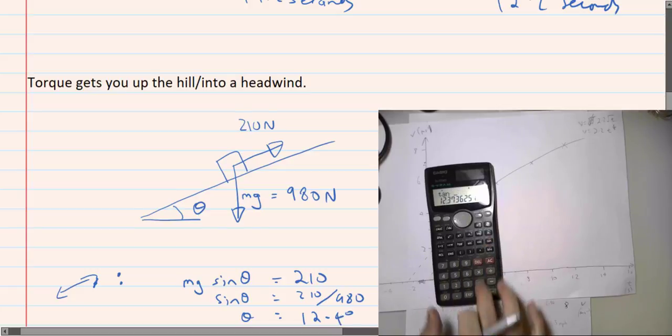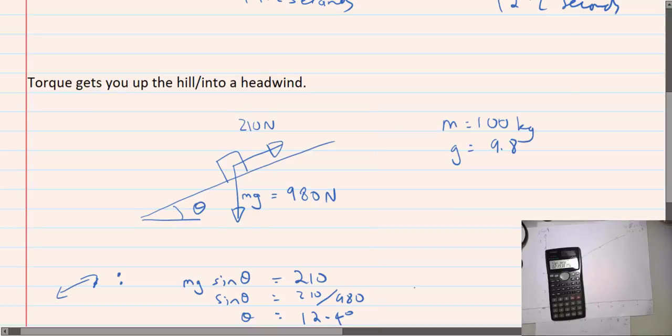I can go up a slope of 12.4 degrees. What is 12.4 degrees? Well, if I want the gradient as a percentage, I need to do tan theta. So tan theta would be 21%, 22%, okay, 22%, which is very steep.